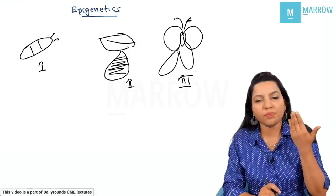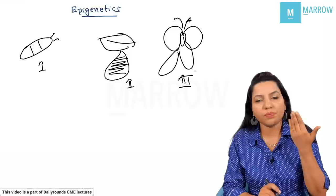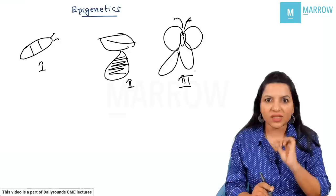Epigenetics — the name itself tells you what it means. 'Epi' means 'over' or 'outside.' So there is something which is controlling the genes from above — that is called epigenetics.